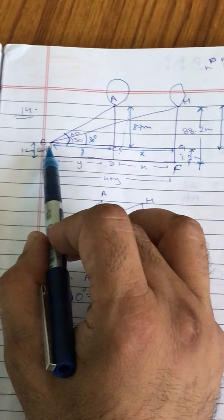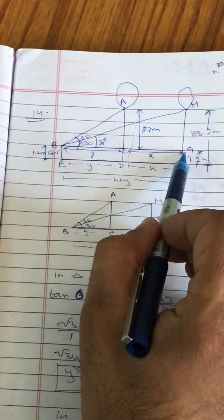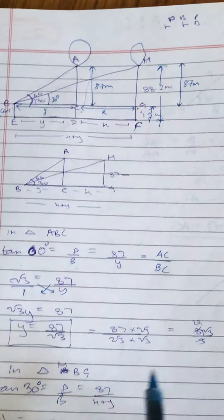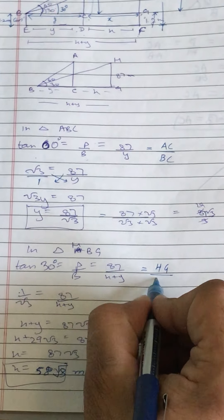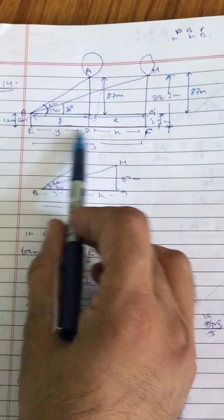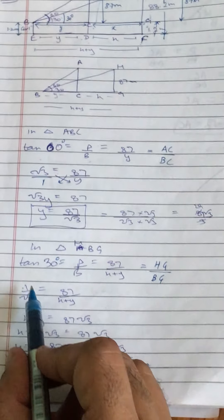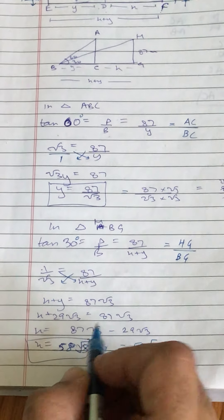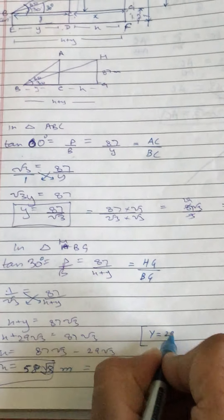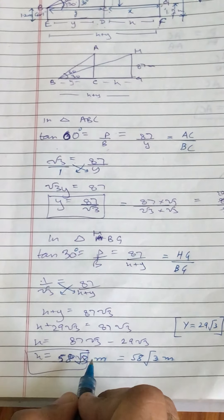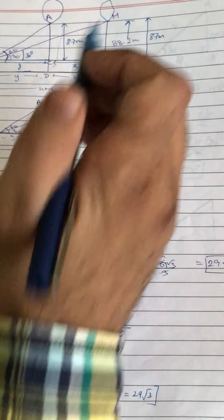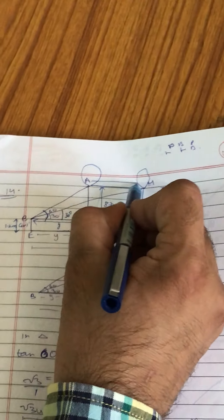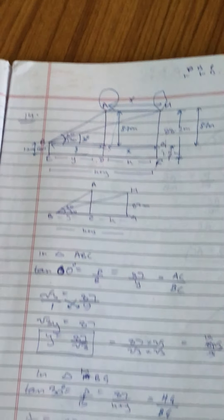Iske baad doosra triangle HBG mein lagaiye tan30° equal to P upon B, yani HG upon BG. HG is 87, aur BG poora X plus Y hai. 1 by root 3 equal to 87 upon (X plus Y). Cross multiply: X plus Y = 87 root 3. Y ki value pehle hi nikaal li thi — 29 root 3. To X aajayega 87 root 3 minus 29 root 3 = 58 root 3. Unhe poocha tha balloon ne kitna distance travel kiya — jo ki CG aur DF ke barabar tha, yani X tha. Answer aajayega 58 root 3 meter.